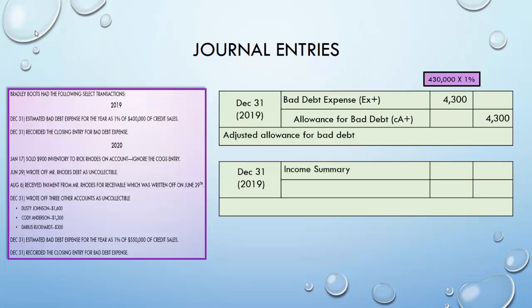On December 31st 2019, bad debt expense is a temporary account, so we have to close it. We're going to close it just like every expense account: using the income summary method, we debit Income Summary for $4,300 and credit Bad Debt Expense for $4,300 to reduce it to zero. That closes our bad debt expense account.